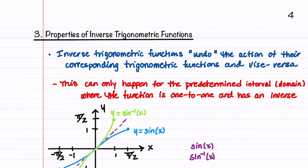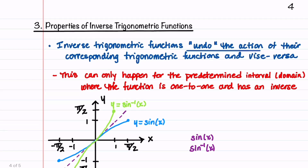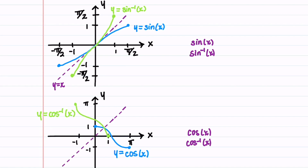We'll now talk about the properties of inverse trigonometric functions and look at the graphs of each of the three trig functions along with their inverses. Inverse trigonometric functions undo the action of their corresponding trigonometric functions, and this can only happen for a predetermined interval or domain where the function is one-to-one and has an inverse. Here we have sine and inverse sine pictured together. Since the functions are inverses of each other, they're symmetric about the line y equals x. Sine x is defined between minus pi over two and pi over two, and inverse sine x is defined between minus one and one.